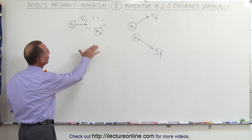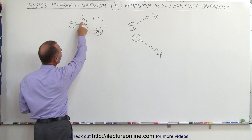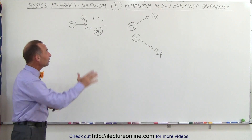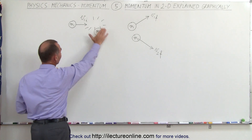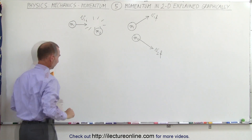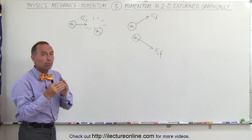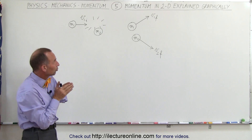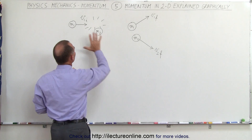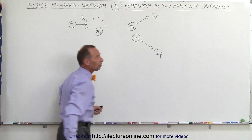Well, notice here we have one billiard ball moving to the right at some initial velocity, and the second one which is not moving at all. So the initial momentum of the system — the two billiard balls — is equal to the momentum of this object right there. After the collision, both billiard balls move out in different directions, and we can say that the momentum before the collision must equal the momentum after the collision.